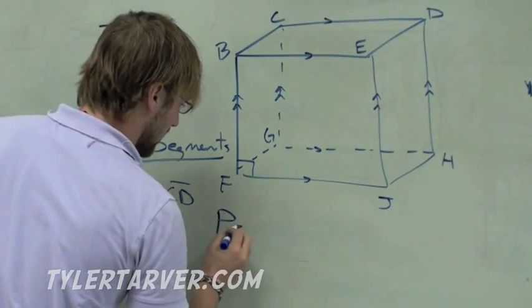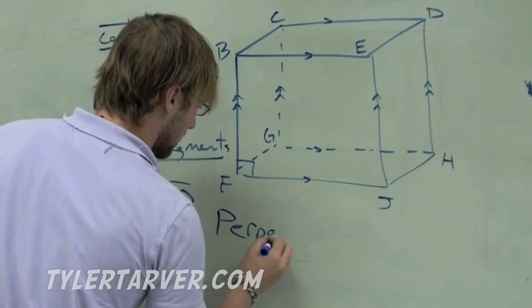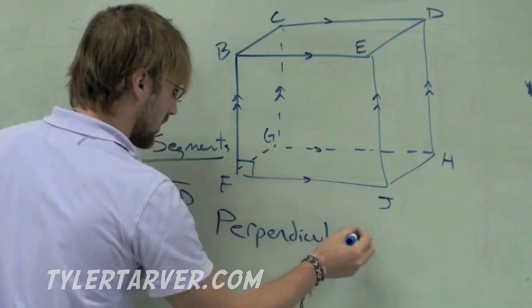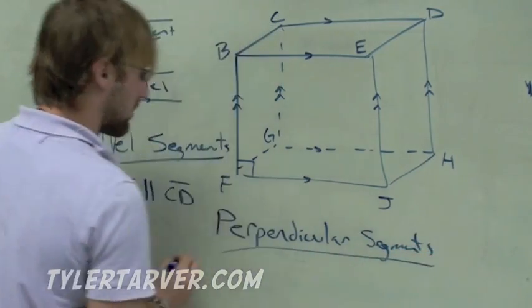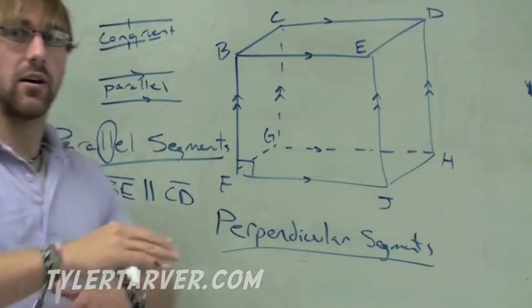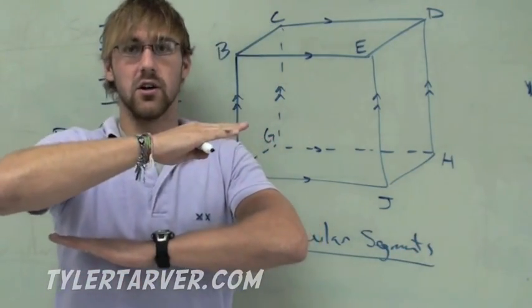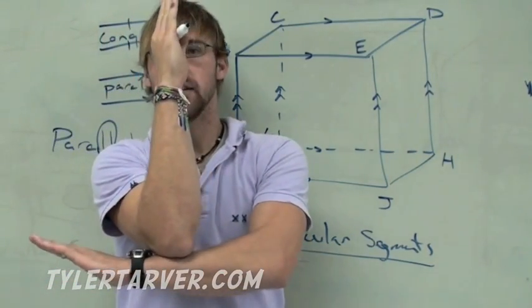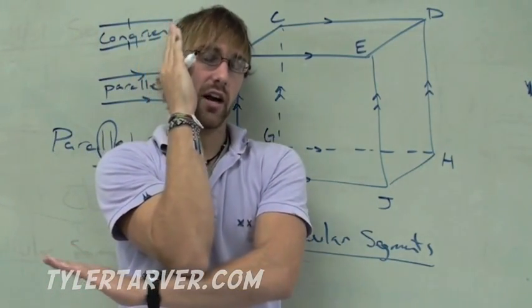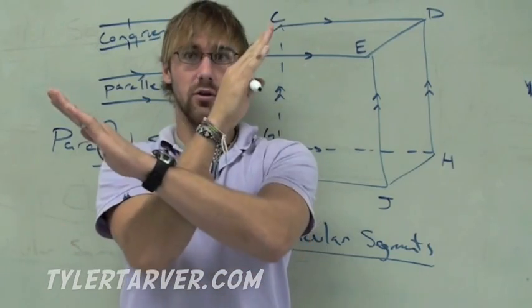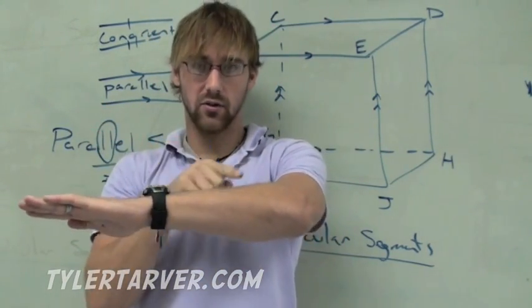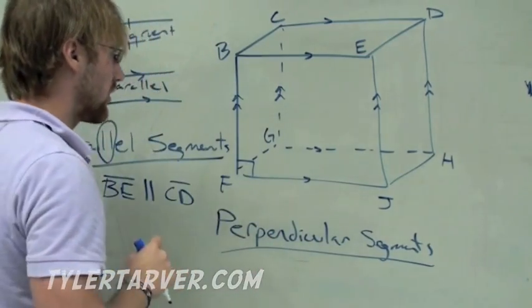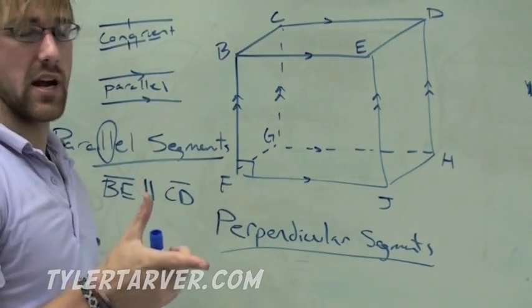Let's go with perpendicular segments. Parallel means they go on forever and they never touch. Perpendicular means they cross and they make a 90 degree angle. It can hit like this and stop. They can go through each other. They can be turned any which way. As long as that angle that they make is a 90 degree angle, which means it's like the corner of a piece of paper.